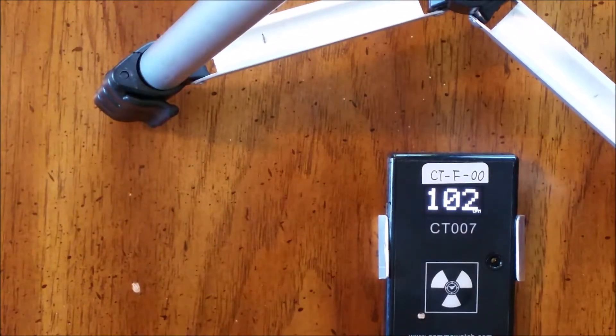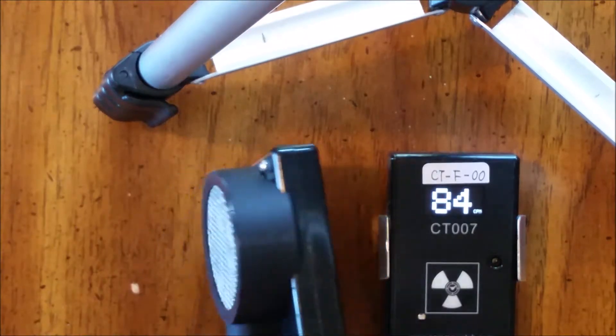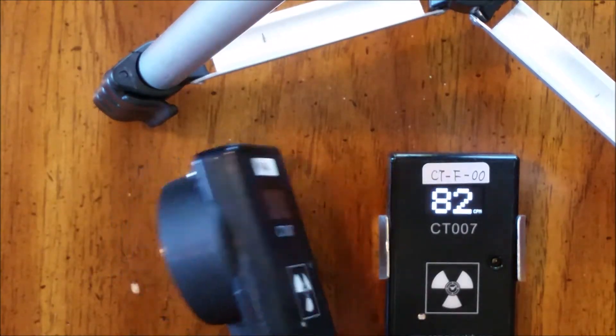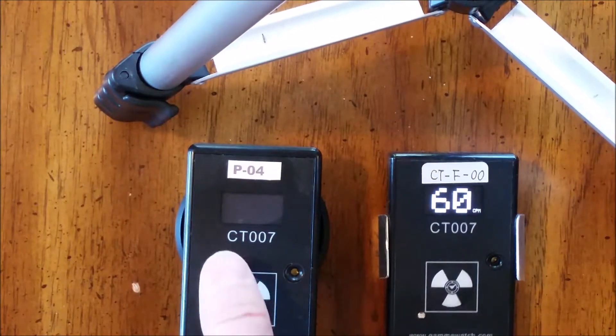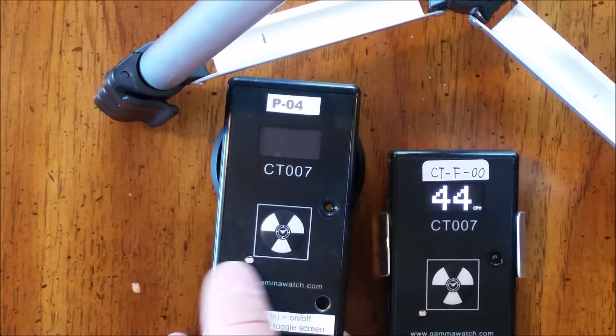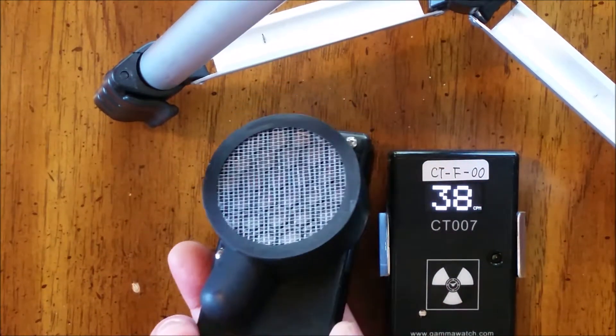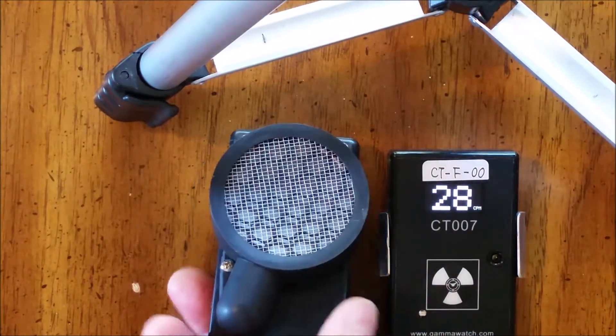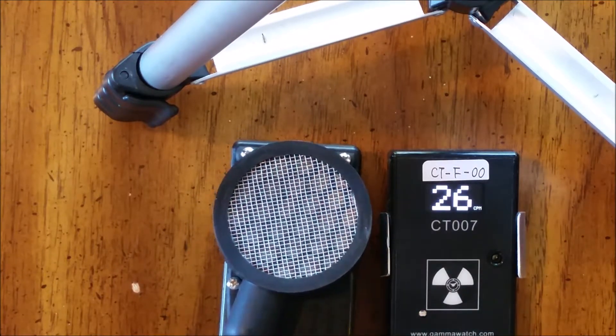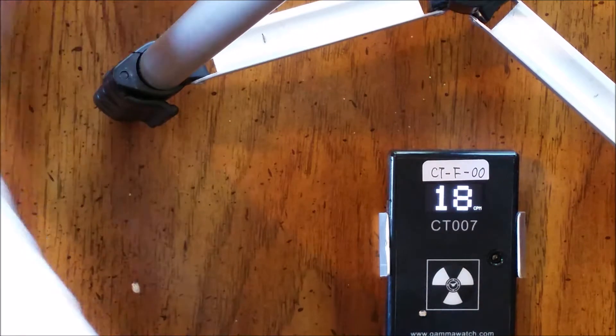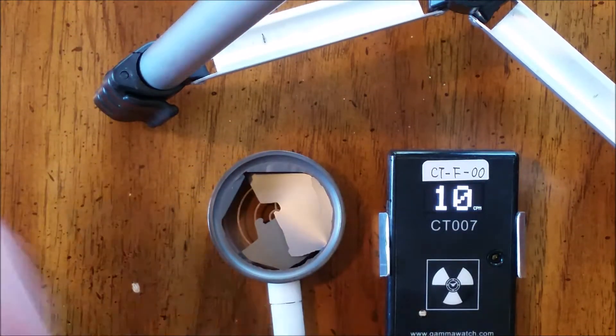To be honest you can do all these same things with a pancake type radiation detector which we also make. But these things are getting up there in price. They're quite a bit heavier and bulkier. But the main problem is that this window is extremely fragile. And if you just look at them a little funny, this is what happens to the window.